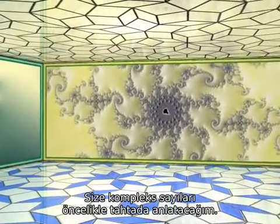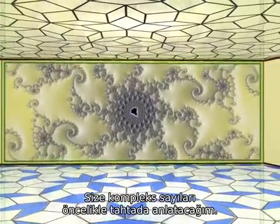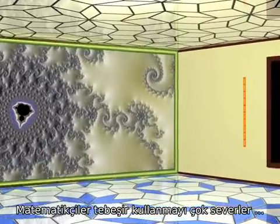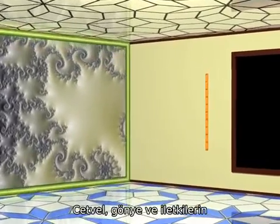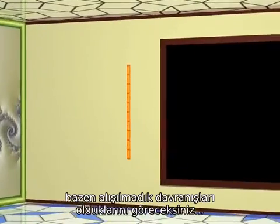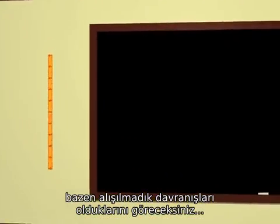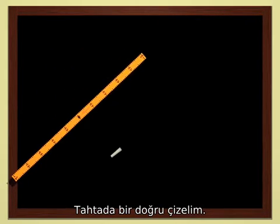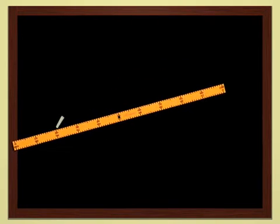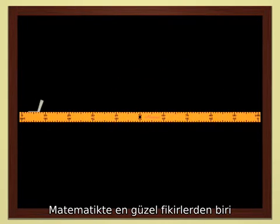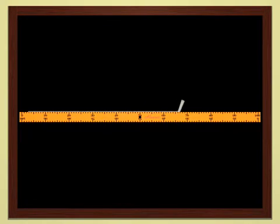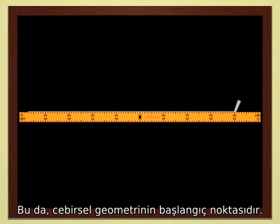Let me begin by explaining the complex numbers on the blackboard. Mathematicians just love writing with chalk. You'll see in a minute that my ruler, this set square and protractor, behave rather oddly sometimes. Let's draw a graduated line on the blackboard. One of the most beautiful ideas in mathematics is to link geometry to algebra. This is the starting point of algebraic geometry.